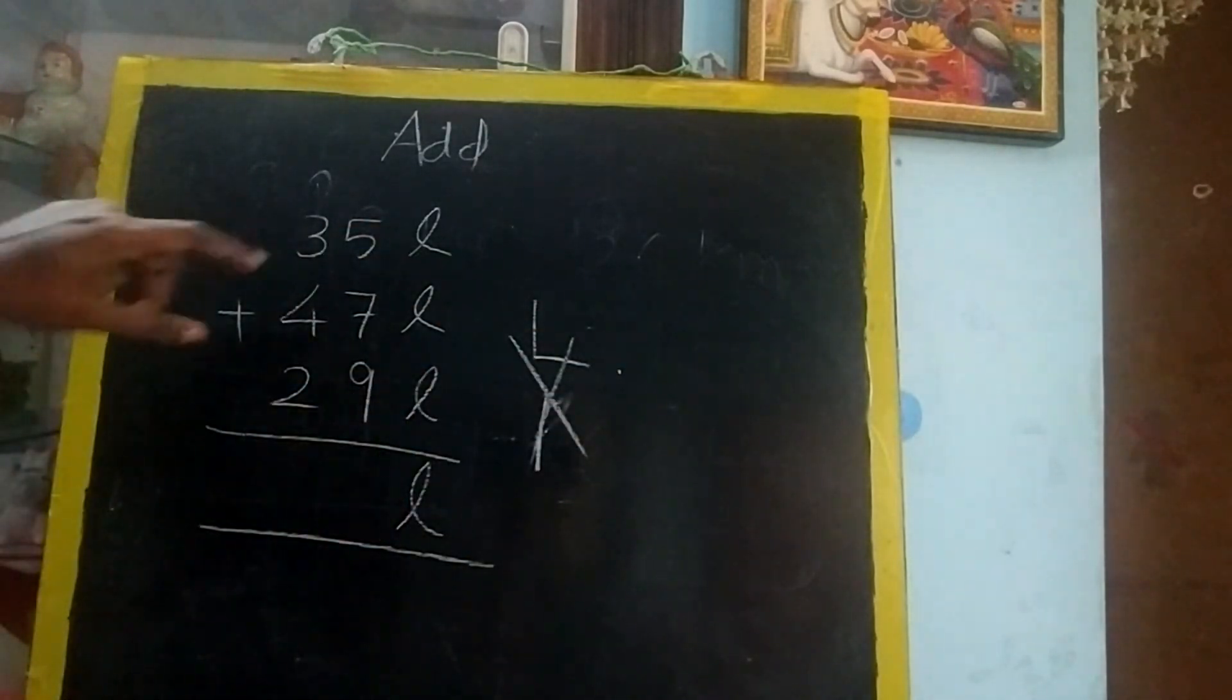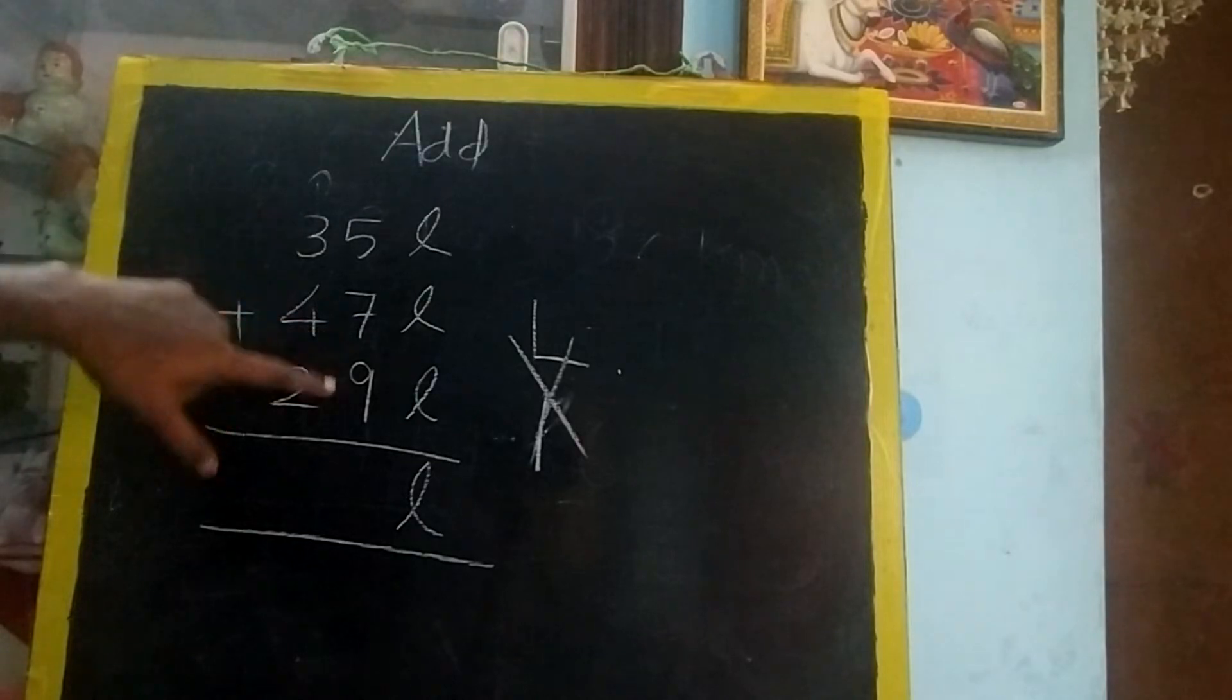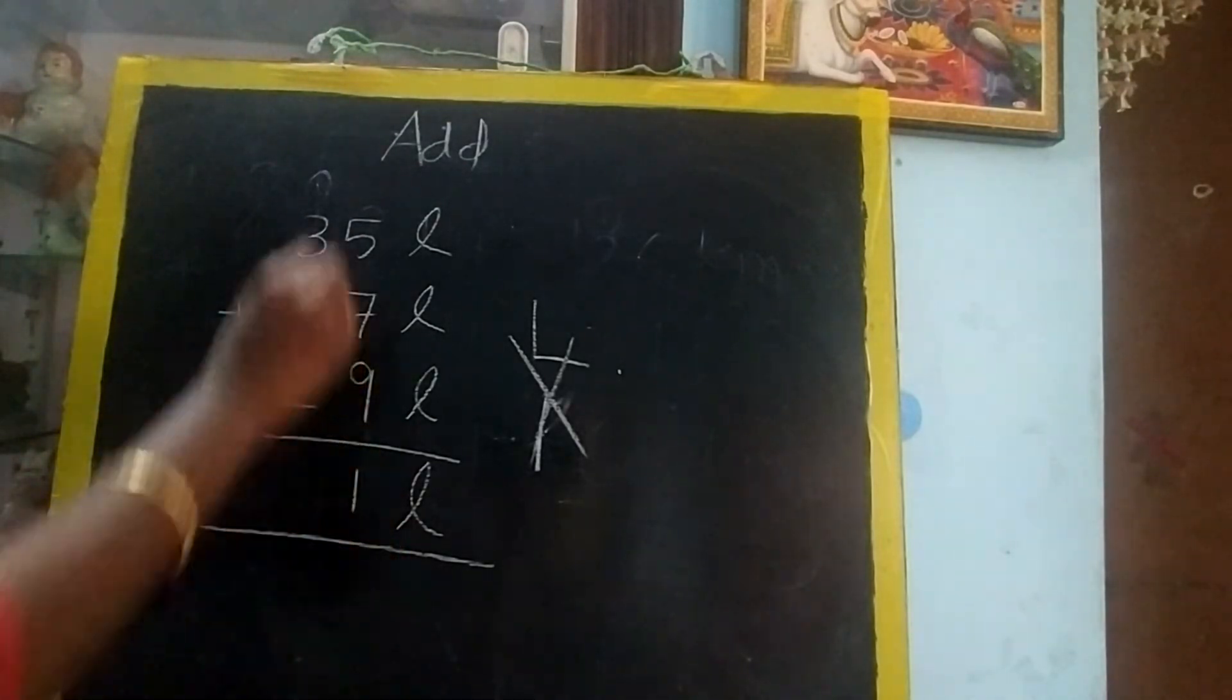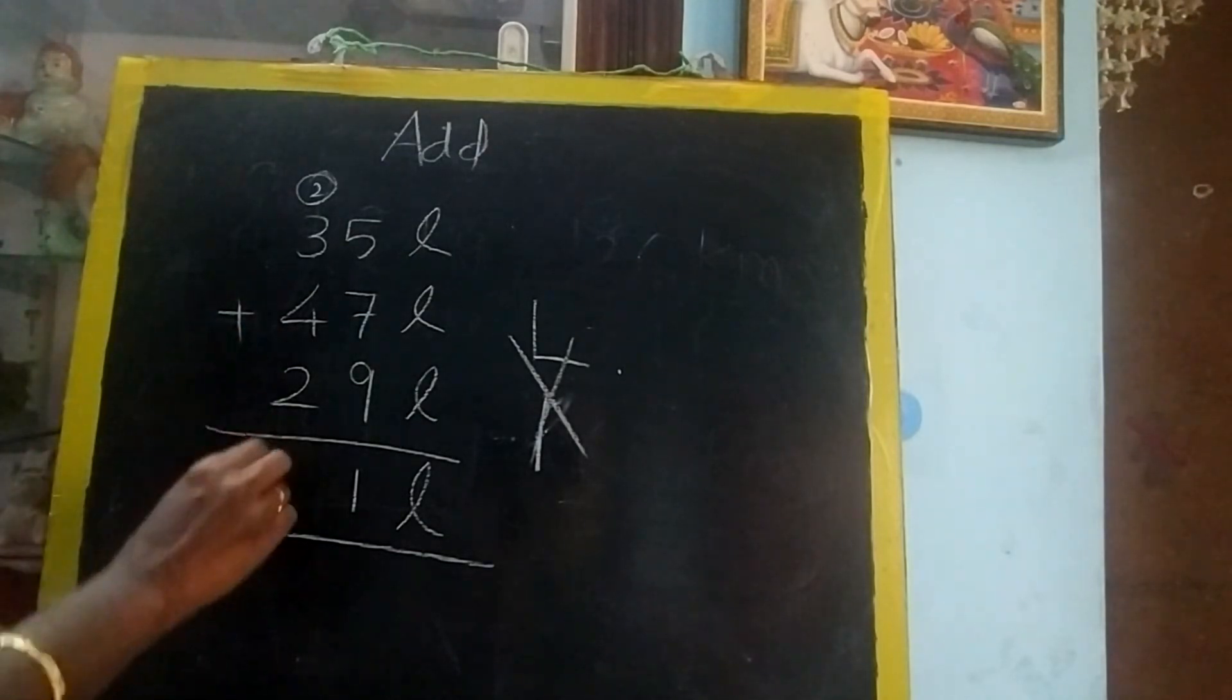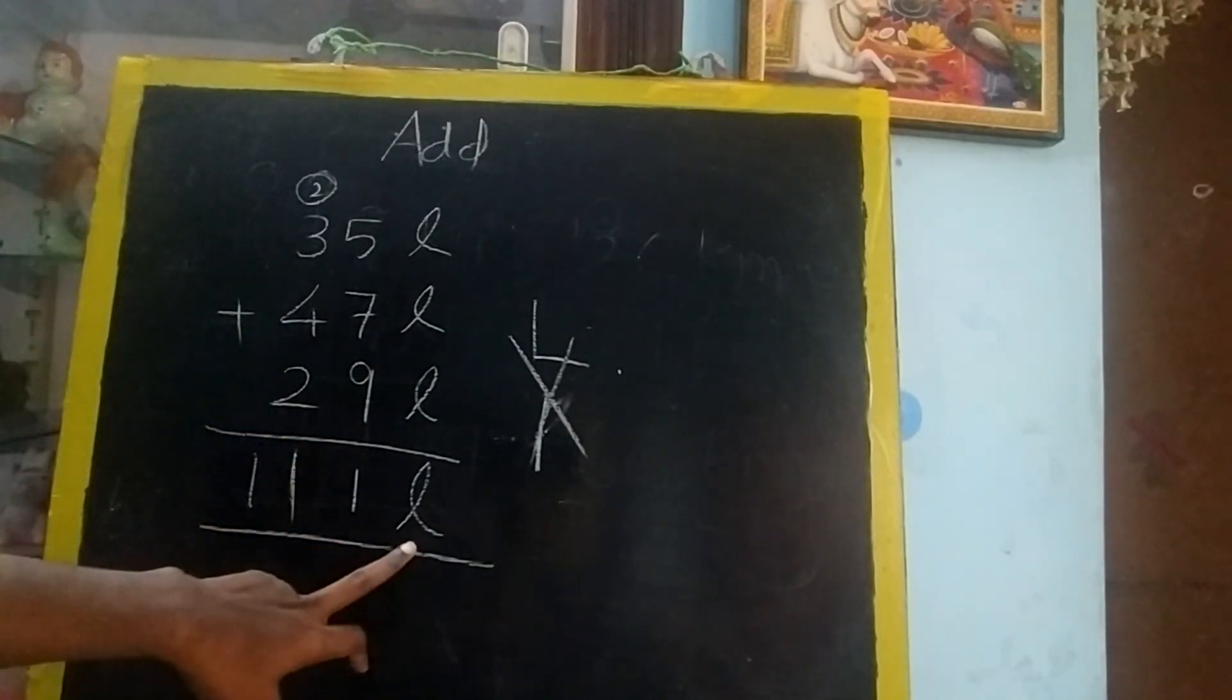So cursive L. Now add 5 plus 7, 12. 12 plus 9, 21. So 2 carry over. 2 plus 3, 5. 5 plus 4, 9. 9 plus 2, 11. 111 liters.